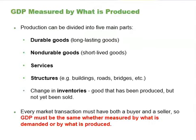Remember that every market transaction must have both a buyer and a seller. So GDP must be the same whether measured by what is demanded or by what is produced. GDP measured by what is produced would have five components of a nation's production: durable goods, non-durable goods, services, and infrastructures such as buildings, roads, and bridges.